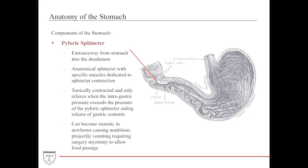In newborns, pyloric stenosis can occur where the pyloric sphincter region is stenotic or closed off. These children present early in infancy with projectile non-bilious vomiting — no bile because bile cannot reach this portion of the stomach. In these cases, surgery with a myotomy — cutting a portion of the muscle — is necessary to allow food to pass through efficiently.